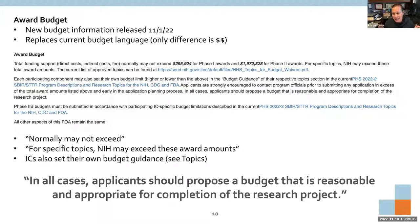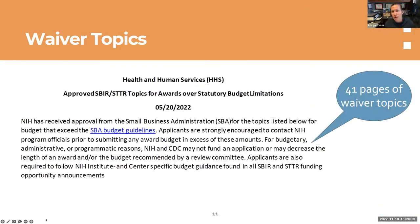That 'normally may not exceed' is loosey-goosey language — it's a range to target. Very rarely do I put in a phase one at exactly $295,000; the average phase one I'm submitting right now is about $330,000. Budget is not considered in the review process — reviewers only look at whether it's fair and consistent for the work proposed. There are no extra points for coming in right at $295,000; your budget should match the work proposed.